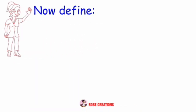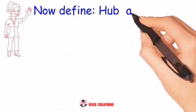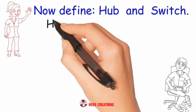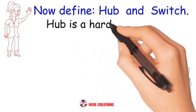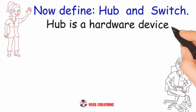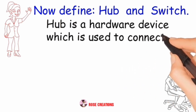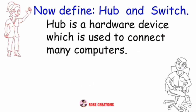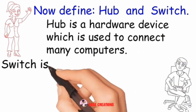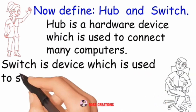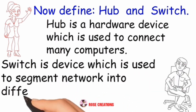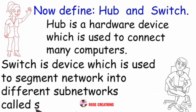Define hub and switch. Hub is a hardware device which is used to connect many computers. Switch is a device which is used to segment a network into different sub-networks called subnets.